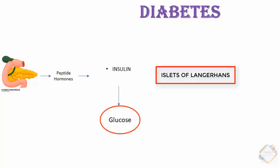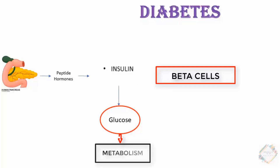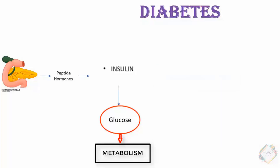Insulin in particular is produced by the beta cells of the islets of Langerhans and is responsible for the metabolism of glucose. When there is an increased amount of glucose in the body, insulin is released, and it is responsible for maintaining glucose levels within the body.